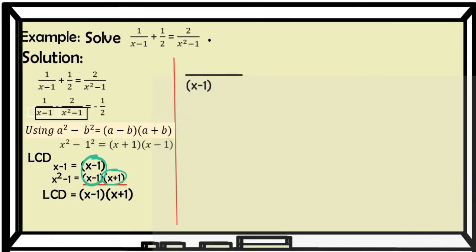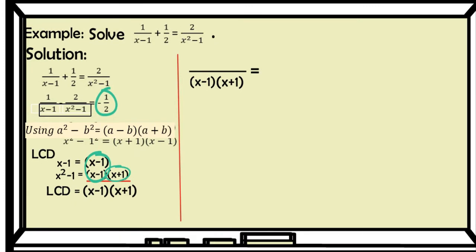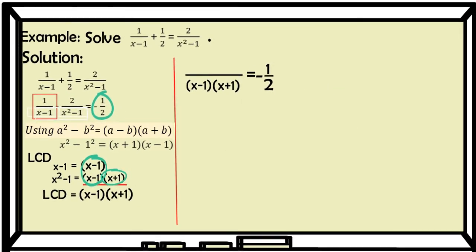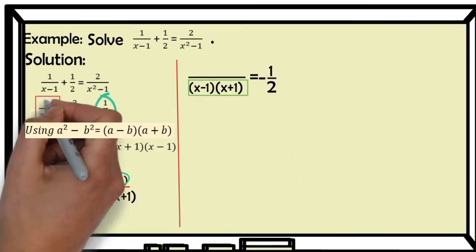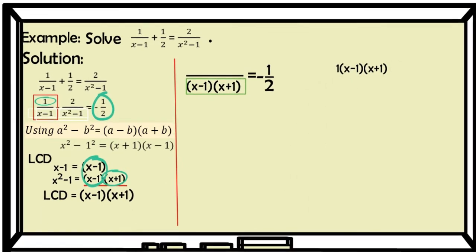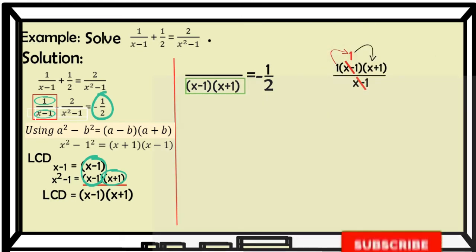Next, write down the LCD. For the first expression, 1 over (x minus 1), multiply the numerator by the LCD. That is 1 times (x minus 1)(x plus 1) over the denominator (x minus 1). The (x minus 1) cancels — that equals 1. So we have 1 times 1 times (x plus 1), giving us (x plus 1).